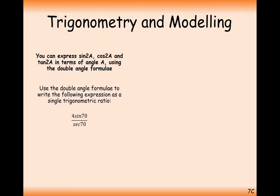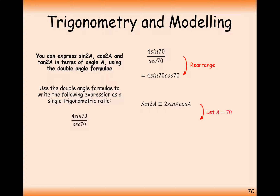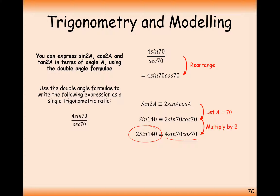Next, using the double angle formula to write an expression as a single trigonometric ratio — a bit more difficult. We treat the divide by sec as dividing by 1 over cos, and when you divide by 1 over something you get that something on the top row, so now it's a cos 70. This vaguely looks like the sine 2a formula, but there's a 4 at the front, so we double both sides. Setting a equal to 70 and doubling both sides gives us the single trigonometric ratio 2 sine 140.